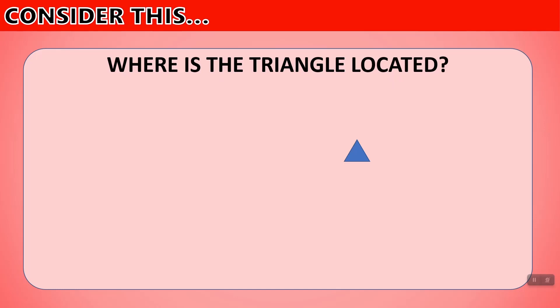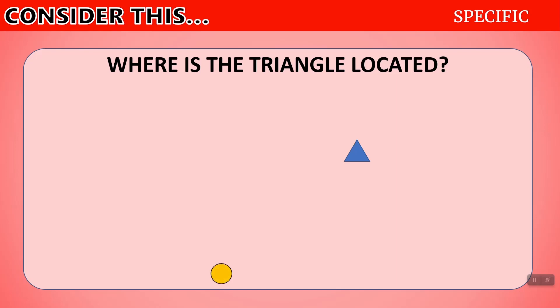Consider this first. Here is a triangle. If I asked where is the triangle located, what answer would you give me? Well, you can say here it is, but that wouldn't be too specific. And so if we wanted to be a little bit more specific as to where the triangle is located, we can give it a description based on something else.